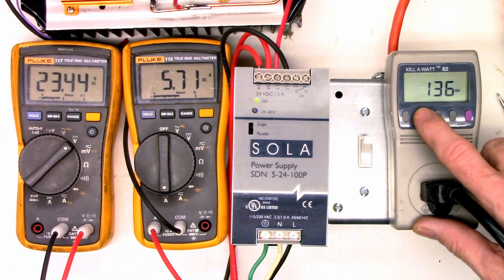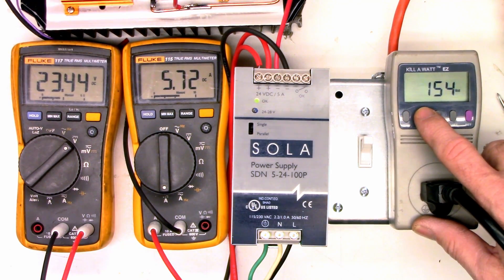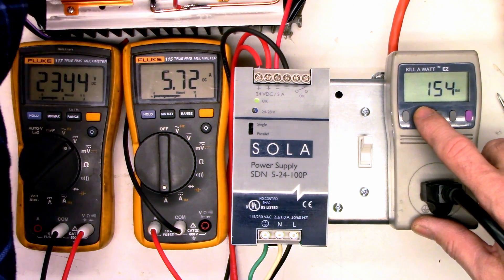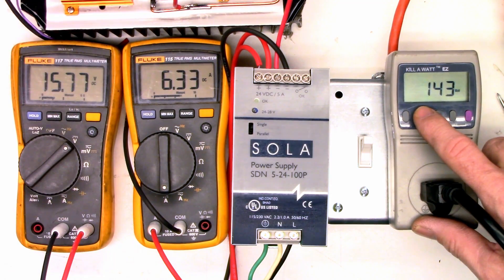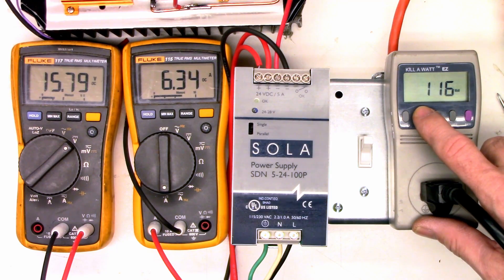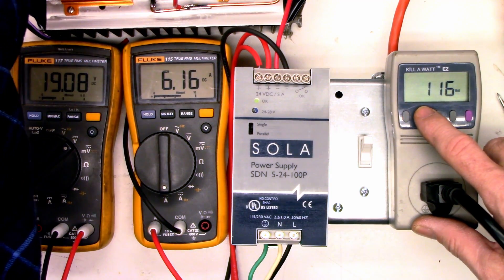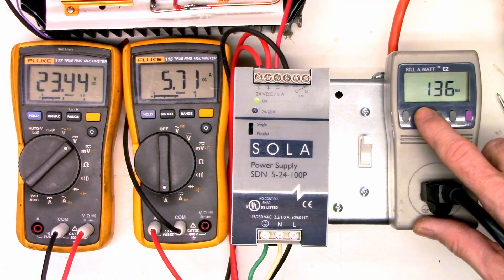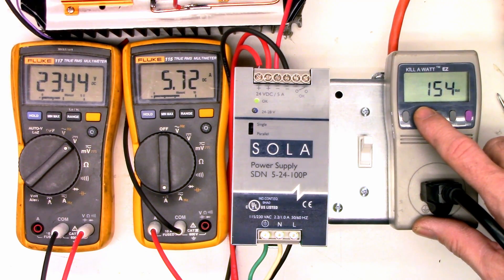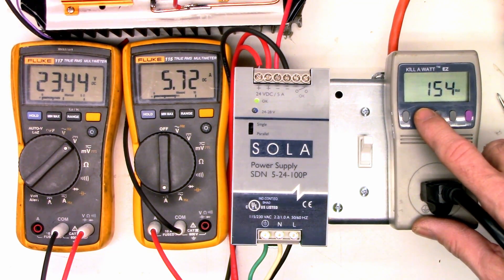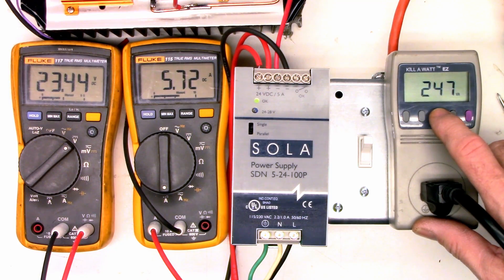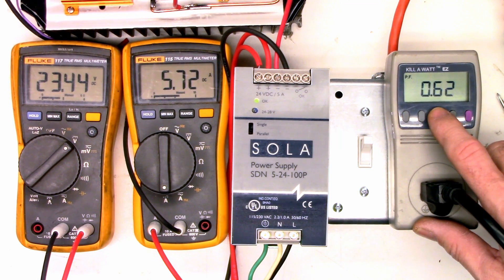Let's get it back into range. The power supply is definitely folding back at that point. When I have what would be the equivalent of an 8 amp load on it, you can see the watts has dipped down to 116. Now that we're back to a 5.7 amp load, the voltage is constant, 23.4 volts, and the watts is up to 154. VA, 247. And a power factor of 0.62.